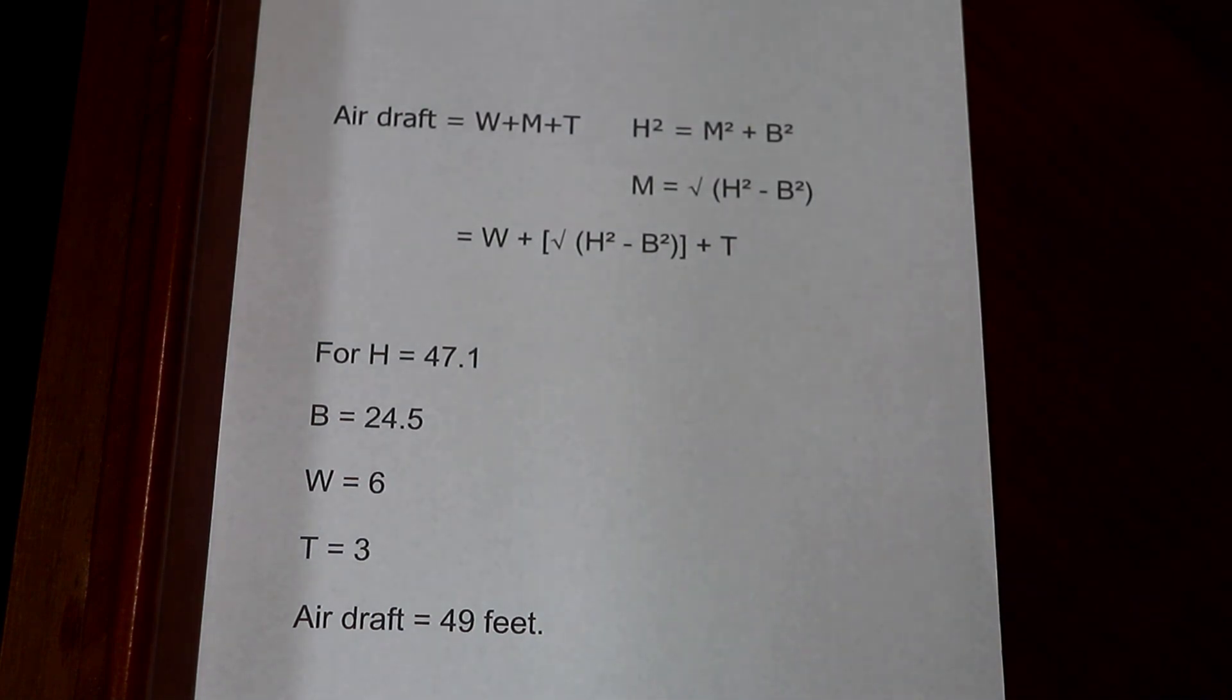The bridge that I want to go under has a stated clearance of 50 feet. The clearance for a bridge is measured at mean high tide, and for that particular bridge, the mean high tide is 9 feet.